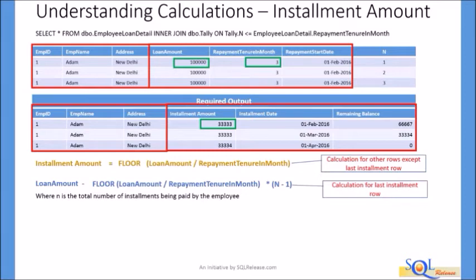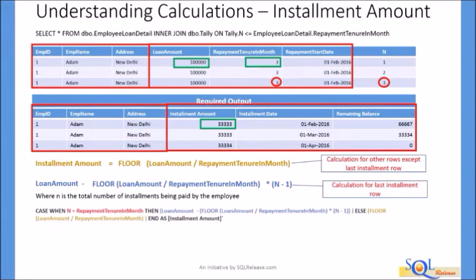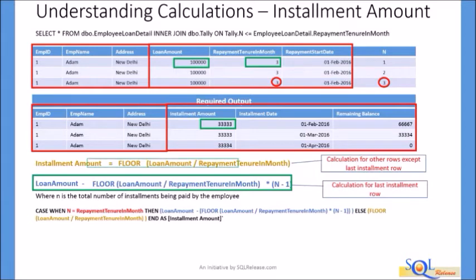Since we need this adjustment only in the last installment row, we first identify it. In the last installment row for each employee, the value in the Repayment Tenure in Month column becomes equal to the value in column N. We use a CASE expression to conditionally compute the installment amount: when the value of N equals Repayment Tenure in Month — indicating the last installment — we use the adjusted calculation; otherwise, we use the standard floor division. After adding this CASE expression to the query, the query is updated accordingly.